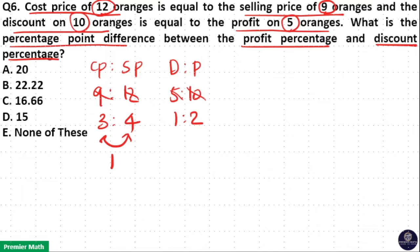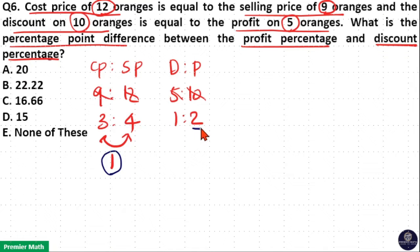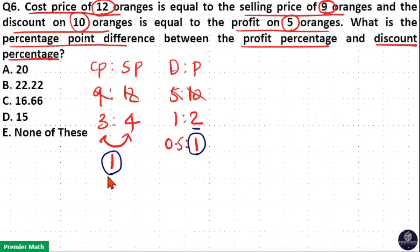Here profit is 1 unit, but in the discount-profit ratio profit is 2 units, so we need to equalize the profit. Dividing the ratio by 2: 1 divided by 2 becomes 0.5, and 2 divided by 2 becomes 1. Now the profit is equalized to 1 unit.